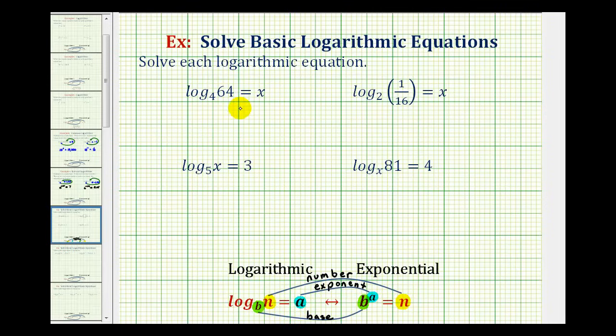So looking at our first example, if we start with the base and work our way around the equal sign, we can form the exponential equation. We would have 4 raised to the power of x must equal 64.